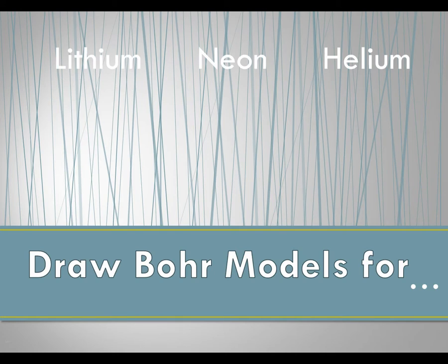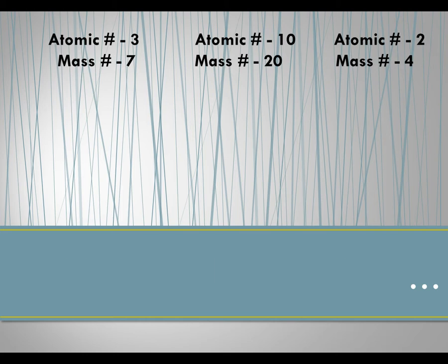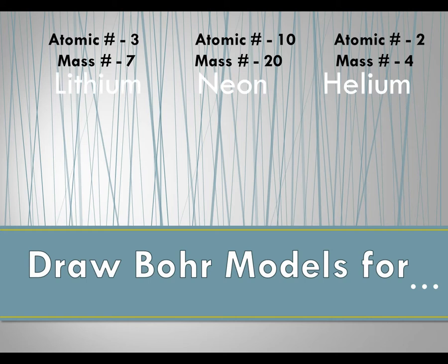Now we're going to draw some Bohr models. Lithium has an atomic number of three and a mass number of seven. First we need to find the number of protons — the number of protons is three because the atomic number is three. The number of neutrons is mass minus atomic number, so seven minus three is four.